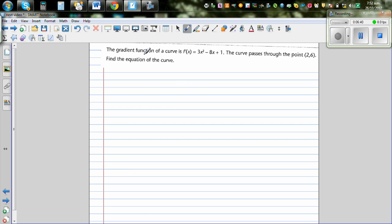The last question, I think you can do this yourself. The gradient of the curve is 3x squared minus 8x plus 1, the curve passes through 2 and 6, find the equation of the curve.